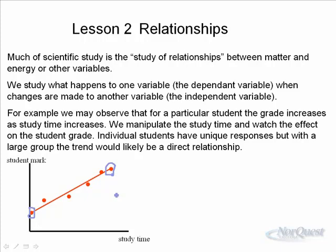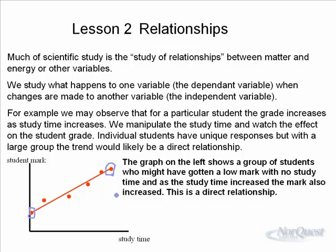It's not always going to be the case, because there are other things to consider, like how effective the student is studying, their study habits, how much background knowledge, what their math skills are, and so on. But in a large group, the trend would likely be a direct relationship. This graph on the left shows a group of students who might have gotten a low mark with no study time, and as the study time increased, the mark also increased. This is called a direct relationship.